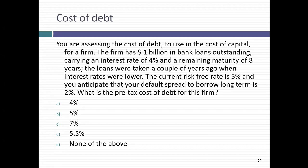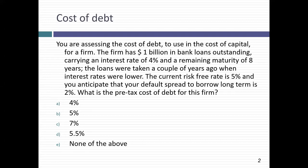To see how costs of debt get screwed up at companies, consulting firms, and banks, I'm going to give you data on a company. It has a billion dollars in bank loans with an interest rate of 4% — locked in long ago when rates were lower. Right now the risk-free rate is 5%, and the default spread you'd have to pay over that 5% if you borrowed today is 2%. Which of these numbers would you use as your pre-tax cost of debt?